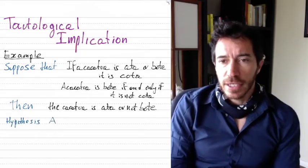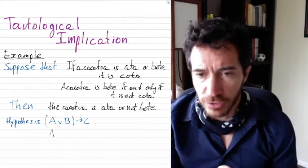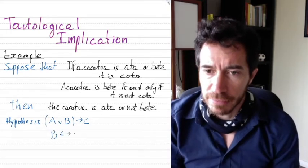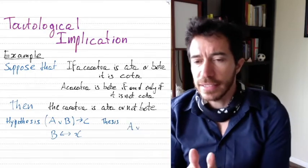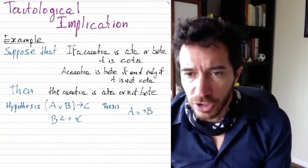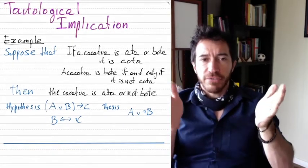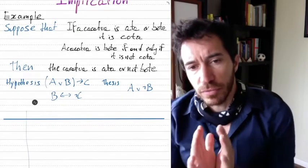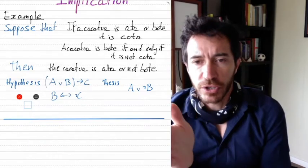The hypotheses are: ata or bote implies cota — so A for ata, B for bote, and C for cota. The second hypothesis is that B if and only if not C, meaning bote if and only if not cota. And the thesis, whatever we are deducing, is that either A or not B, ata or not bote. So is this a valid argument? Let's generate a method using a truth table to figure out if this makes sense.